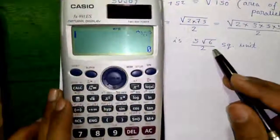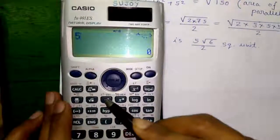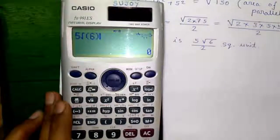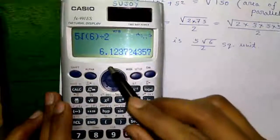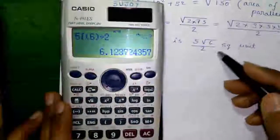You can check it by 5 root 6 divided by 2 which is 6.1237, the same value we got.